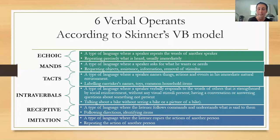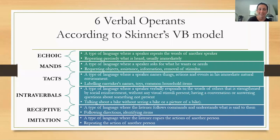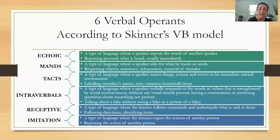A mand is a type of language where a speaker asks for what they want or needs — requesting objects, assistance, information, or removal of a stimulus. A tact is a type of language where a speaker names things, actions, and events in their immediate natural environment — labeling caregivers' names, toys, common household items. For example, if you're walking in the street with your child and they point to a car, that is considered a tact — a label. The response you would get from a parent or teacher would be 'Good job! Yes, that is a car.'